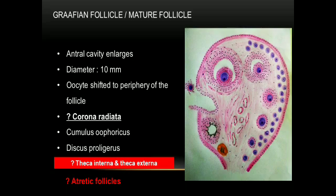For each menstrual cycle, usually only one follicle reaches maturity and undergoes ovulation. The other maturing follicles at various stages of development begin to degenerate. This process of regression and ultimate degeneration and disappearance of a follicle is called follicular atresia, and these are called atretic follicles.